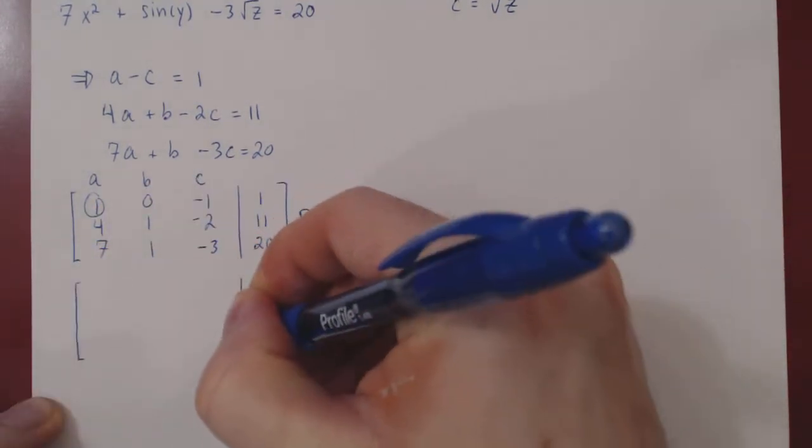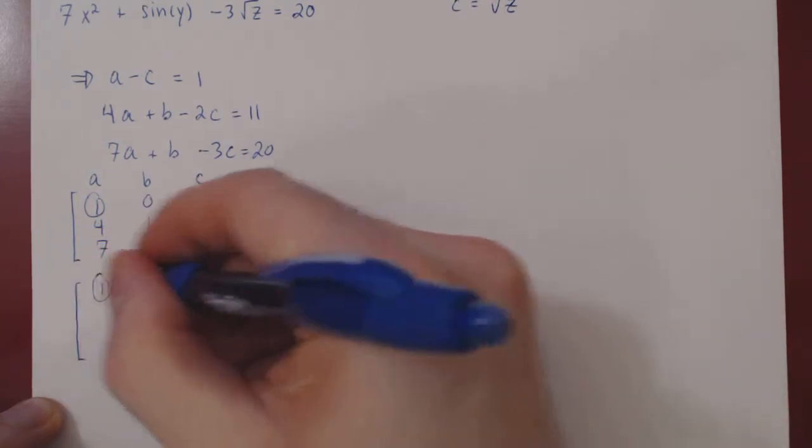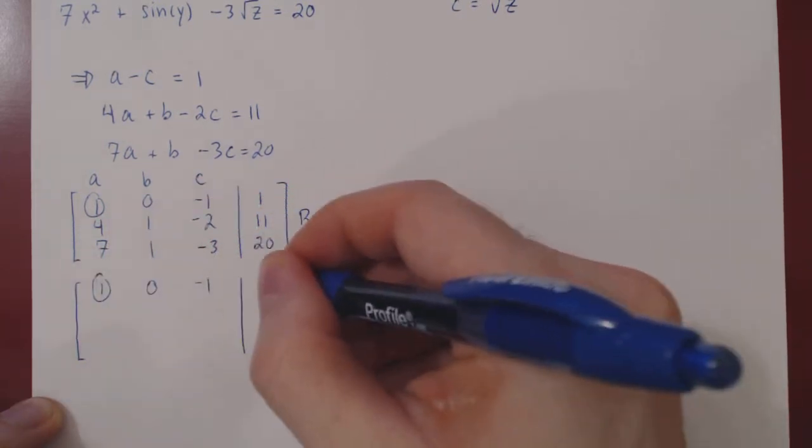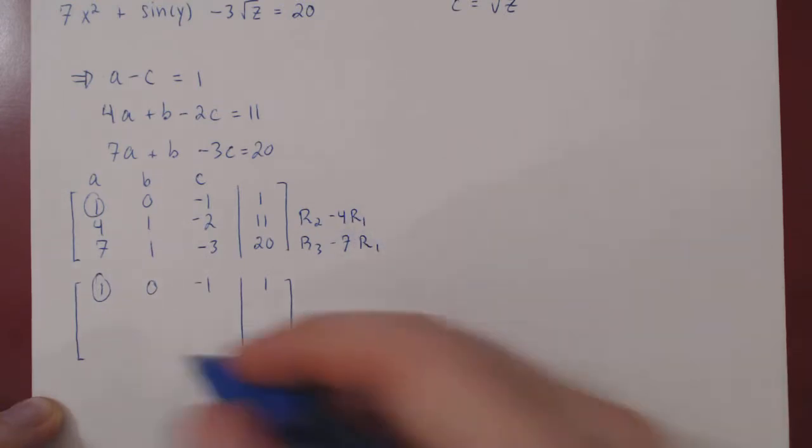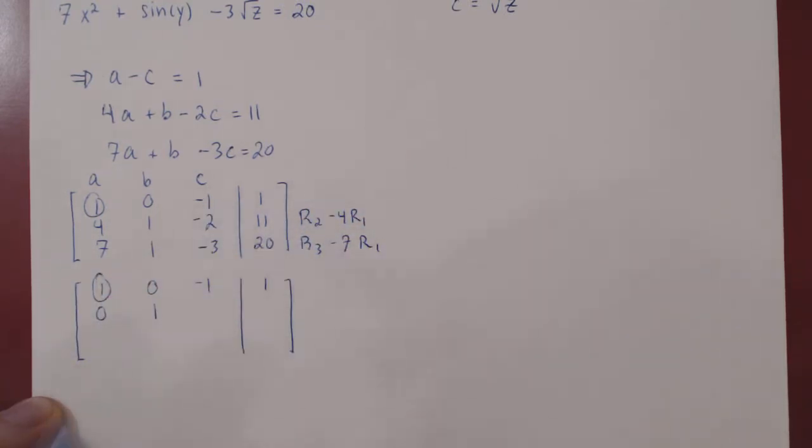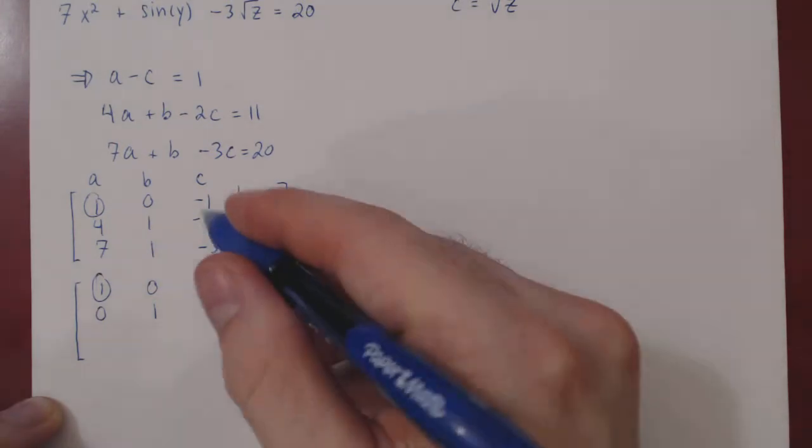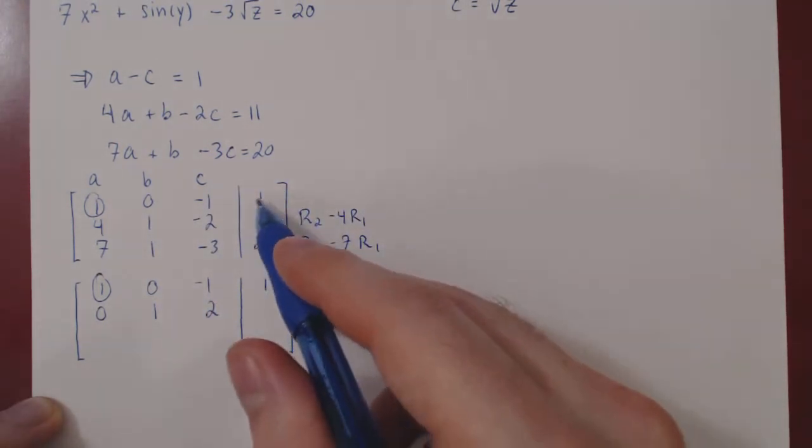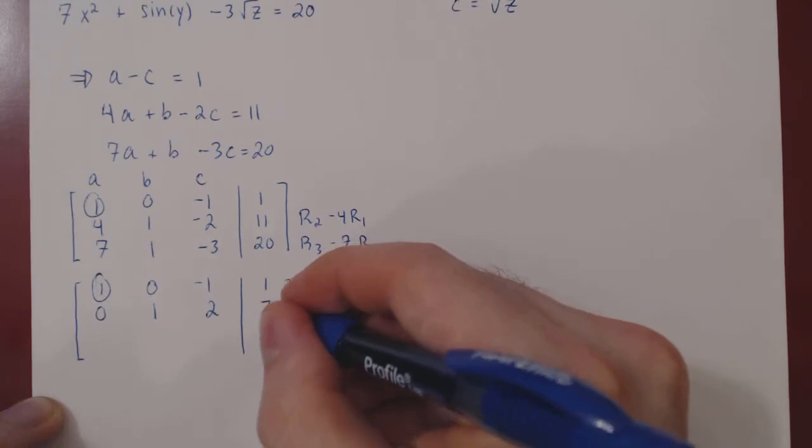We can recopy row 1 as we're not changing it. Let's apply the first row operation. 0, 1, 2 minus 4 times negative 1 is negative 2 plus 4, which is positive 2. 11 minus 4 is positive 7.